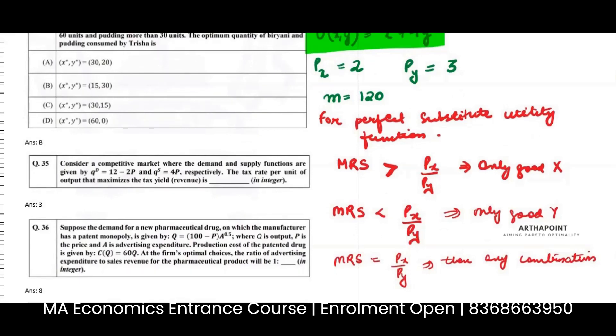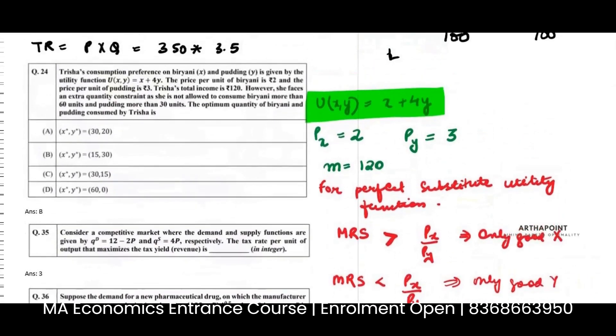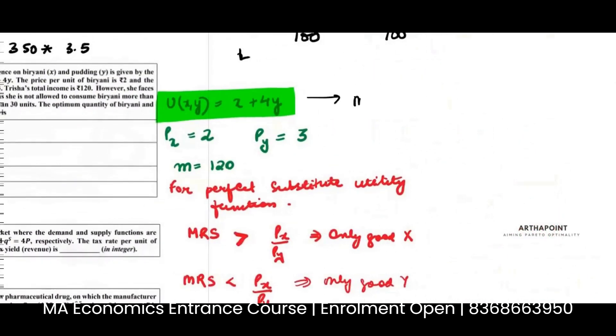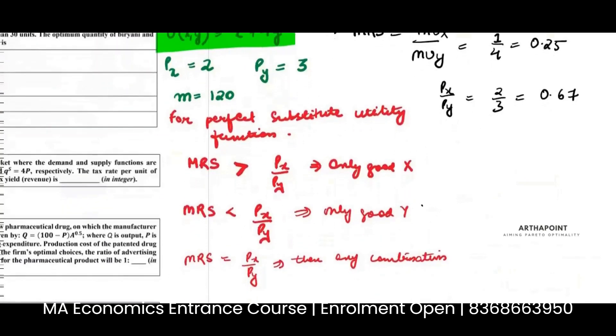In this case, we have to first find the MRS. So let's find that. My MRS will be MUX by MUY, which will be 1 by 4, which will be 0.25. PX by PY is 2 by 3, which is 0.67. So I have this condition: MRS is less than PX by PY.